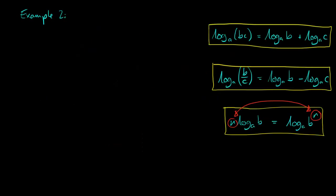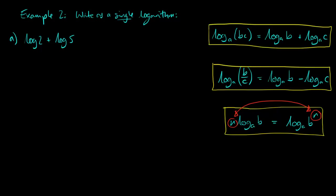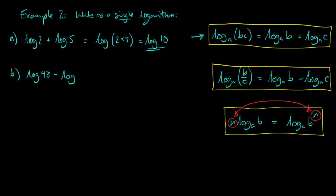Next, we're combining logarithms using these rules to make a single logarithm. For the first one: log 2 plus log 5. Simply using the multiplication-addition rule, that becomes log of 2 times 5, which is log of 10. For the next: log of 48 minus log of 6. Using the division-subtraction rule, that's log of 48 divided by 6, so the answer is log of 8.